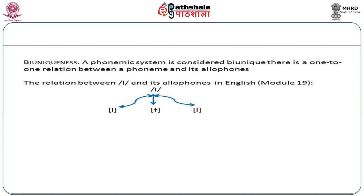Bi-uniqueness was a principle which was strictly adhered to. In reality, however, we find that the principle of bi-uniqueness is difficult to adhere to. For example, in a language such as Malayalam, although the voiceless and voiced plosives /p/, /b/, /t/, /d/, /ʈ/, /ɖ/, /k/, /g/ contrast with each other,